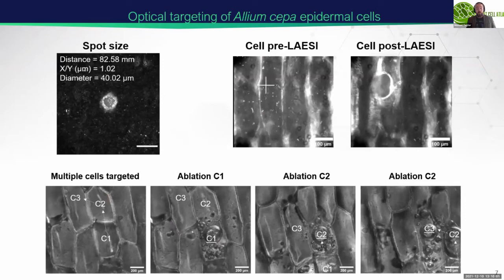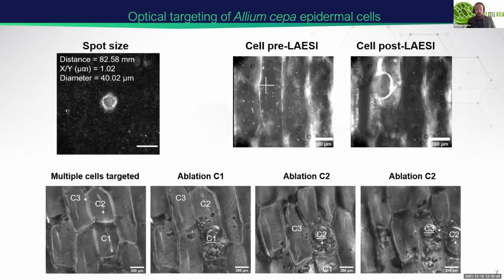This is optical targeting of allium cepa epidermal cells — just onion cells. In the top left corner you can see our achievable spot size, which has to be smaller than the diameter of the cell — basically just one laser shot. I have a series of bright field images showing targeting of individual cells in a tissue. You can see I've pointed out a cell coordinate and directed the laser to fire at that specific cell. In the bottom images, we're looking at multiple cells that have been targeted and ablated sequentially.